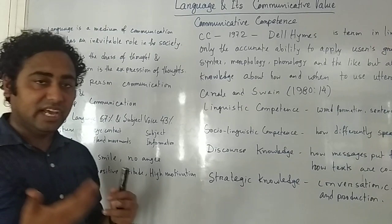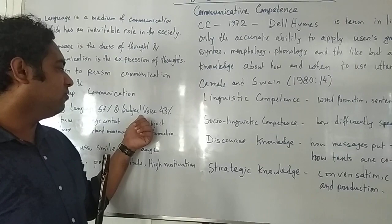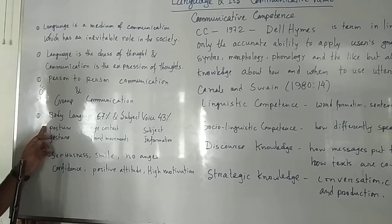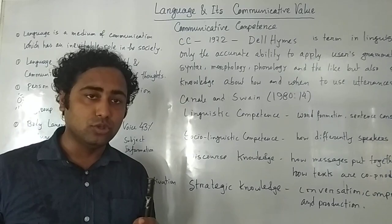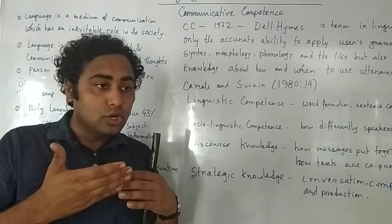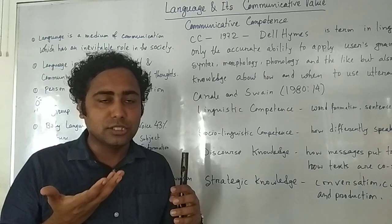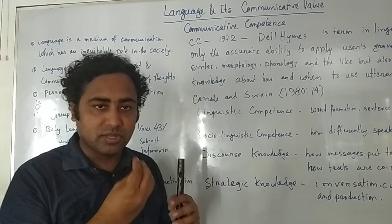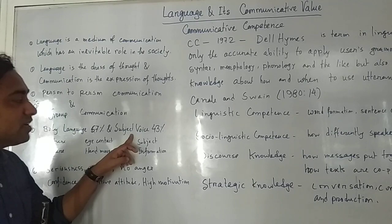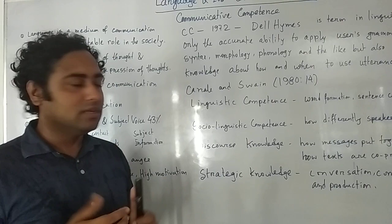Now coming to body language and subject voice. When you talk about anything in English, body language plays a 57% role in communication and subject voice plays a 43% role. Body language includes posture, gesture, eye contact, hand movements, eye expressions, and facial expressions — with these we try to convey some sort of message. Suppose my communicative competence is very poor; at that time we will try to use our body to express something. Body language plays 57% and subject voice plays 43% of communication.